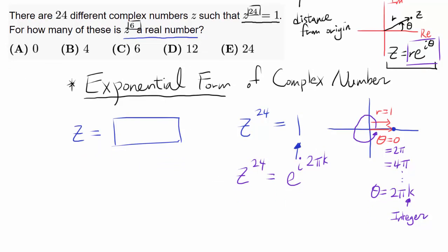We find Z by raising both sides to the power of 1/24. These cancel and you get Z = e^(i·2π/24·k) = e^(iπk/12). So Z = e^(iπk/12).